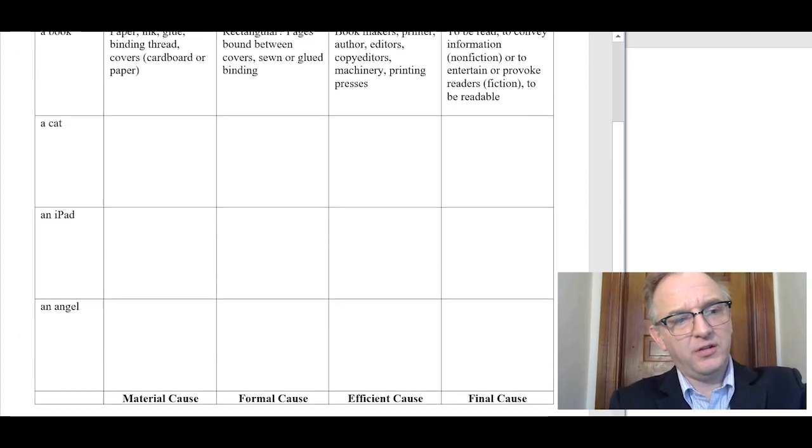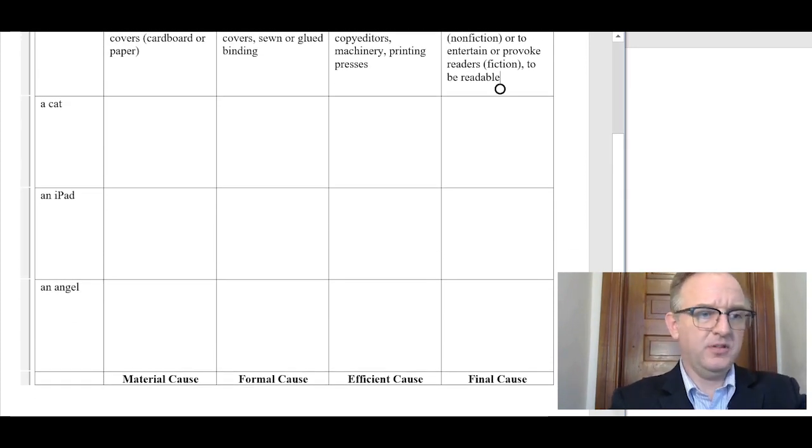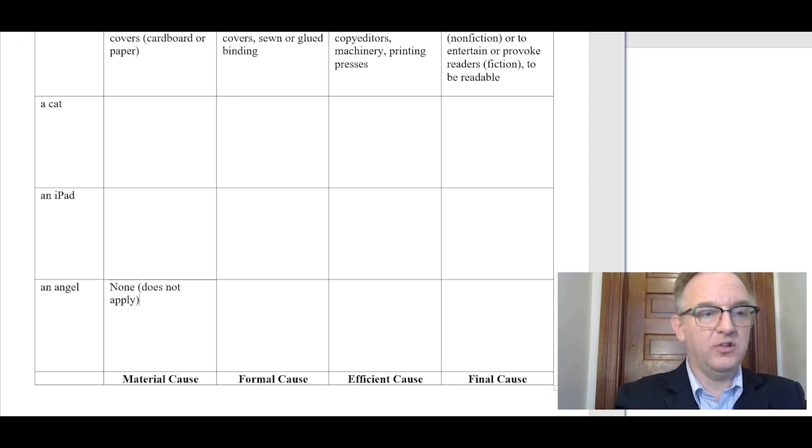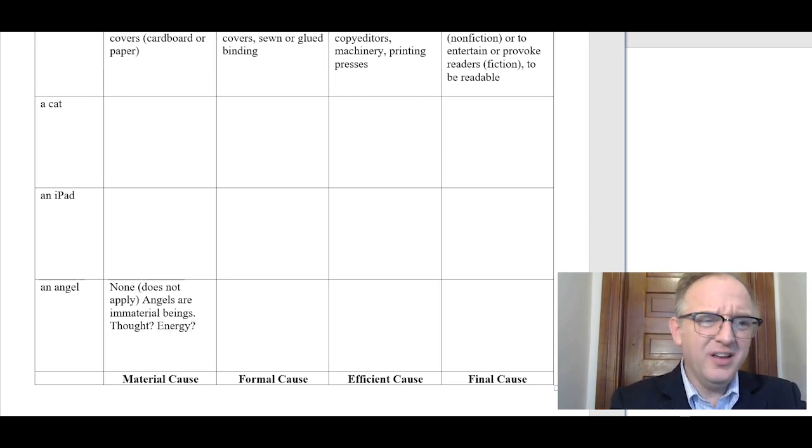I'll skip these next two rows. Let's go down to the final row at the bottom here. I did something here to talk about an angel. What's the material cause of an angel? Think about that for a moment. Well, that's a trick question because there is no material cause. Does not apply. Angels are immaterial beings. If we really had to try to determine the material cause of an angel, we might say thought, maybe some form of energy. I think here this is kind of a trick question because angels don't have any physical existence. We can't say they have a material cause.